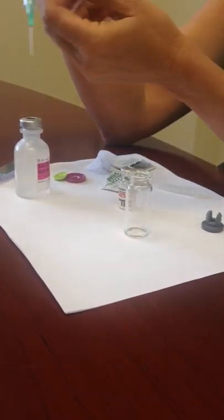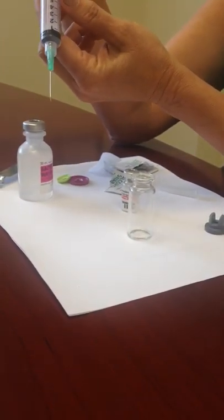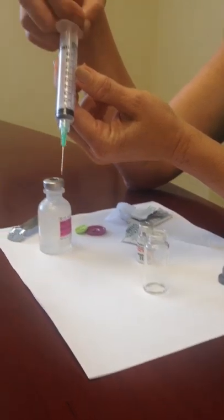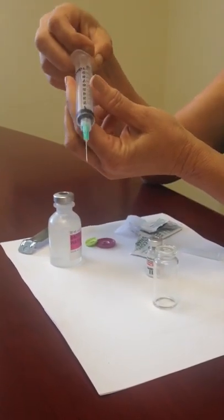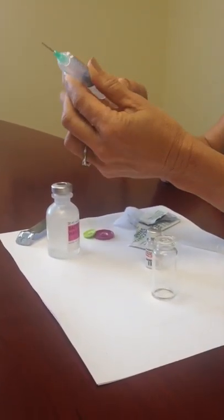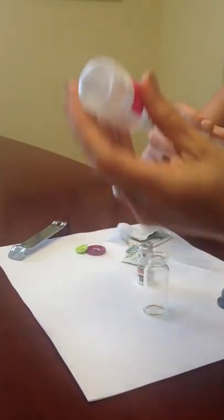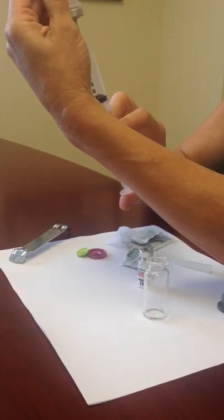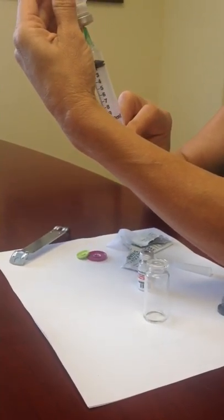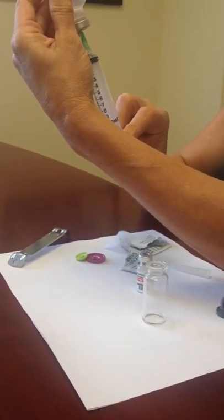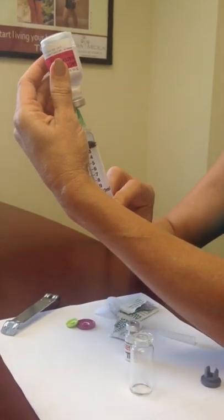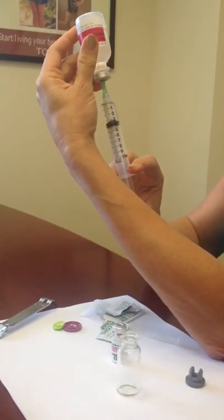Okay, you're going to fill up your large syringe to the sixth line with air, and push it through your rubber stopper and blow the air into the bottle. That will make it easy for you to withdraw exactly 6 ml of water.